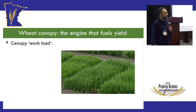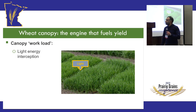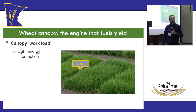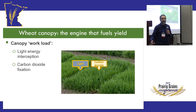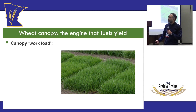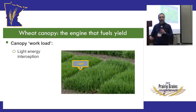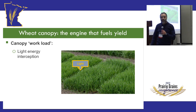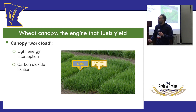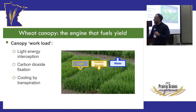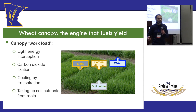The entry point for us is looking at canopy. For wheat and many crops, canopy is essentially the engine that drives yields. Canopies capture light energy from photons to fuel the biochemical reactions needed to generate sugars and starch that go into the seed and generate yield. Canopy also fixes atmospheric CO2 and performs transpiration, which moves water from the soil into the atmosphere.